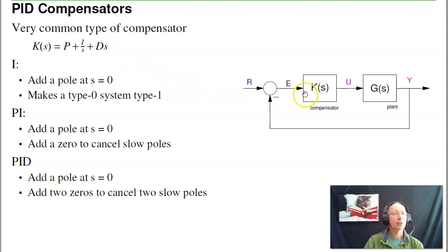The type of compensator we're going to look at would be combining some of these. You've got P compensation, that's just gain compensation. I compensators, that's adding an integrator. I add a pole at s equals zero. That makes the type zero system type one.